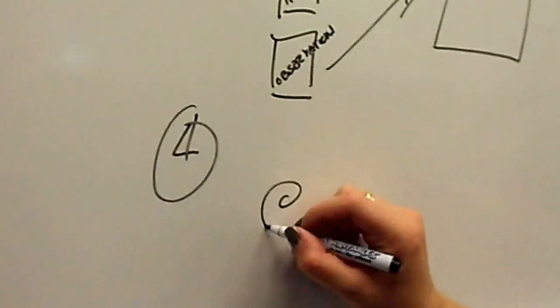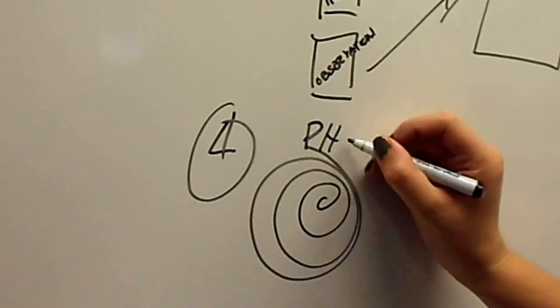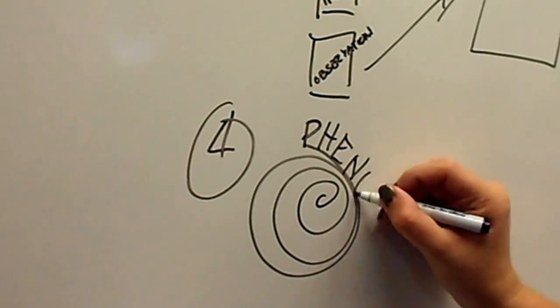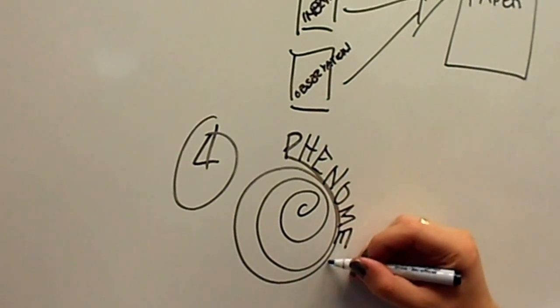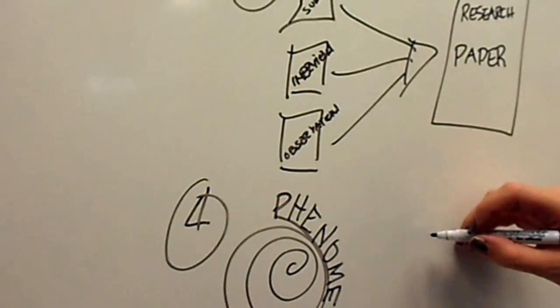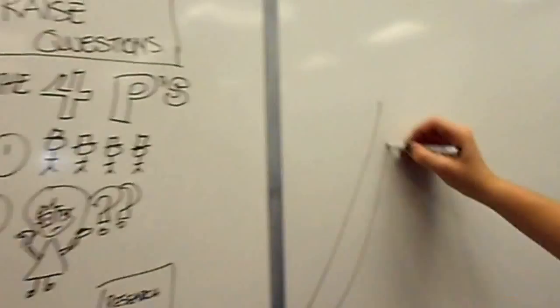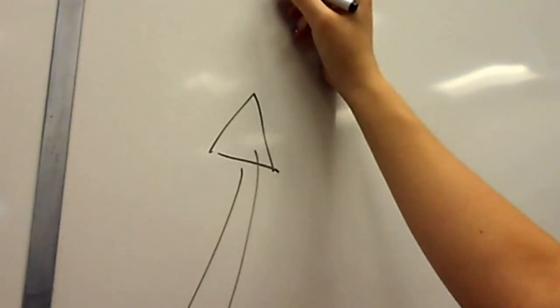The fourth P stands for phenomenon. We could look at the existence of irregularity. For example, we could look at the increasing norm of sustainable buildings and building practices.